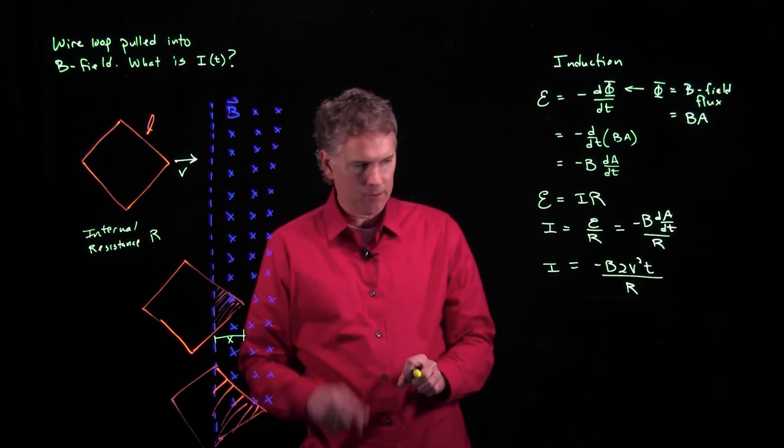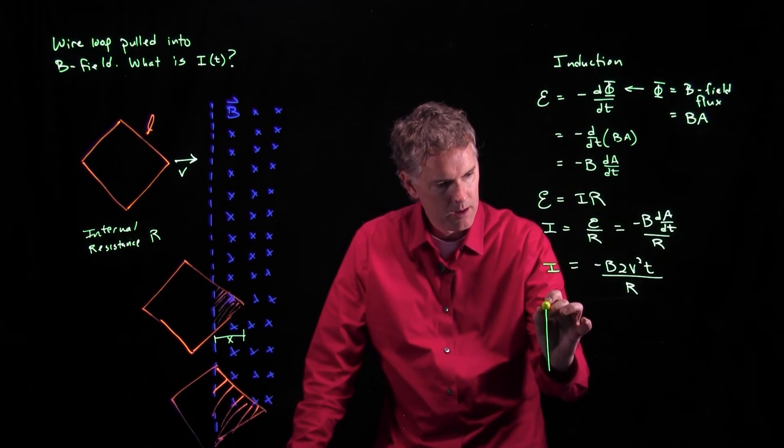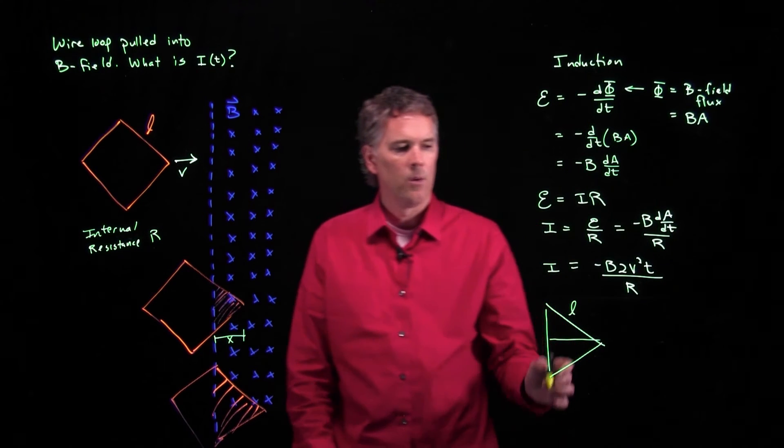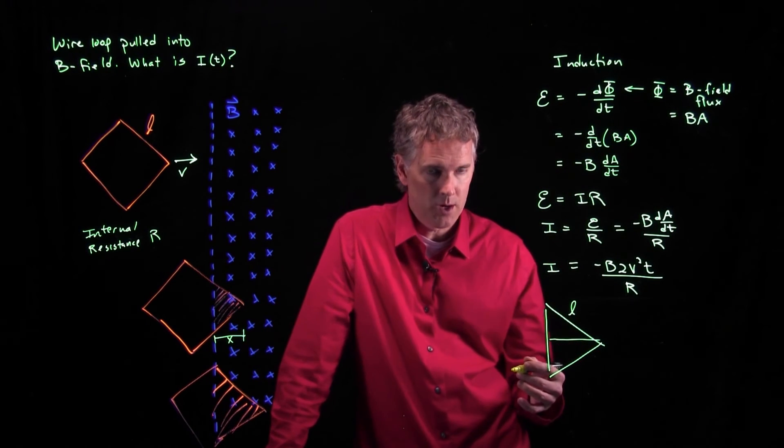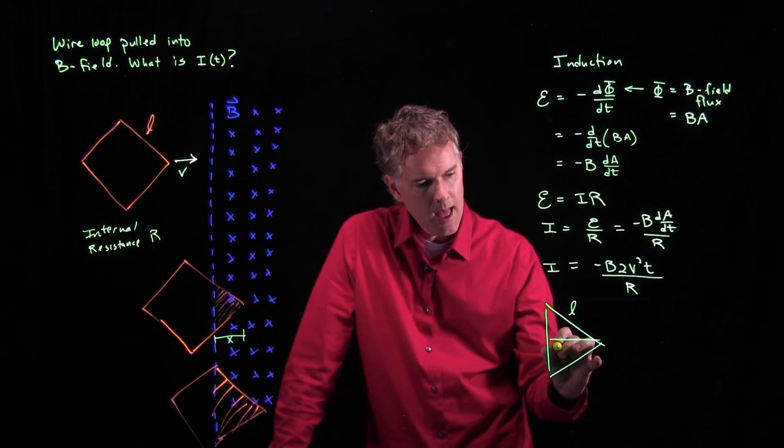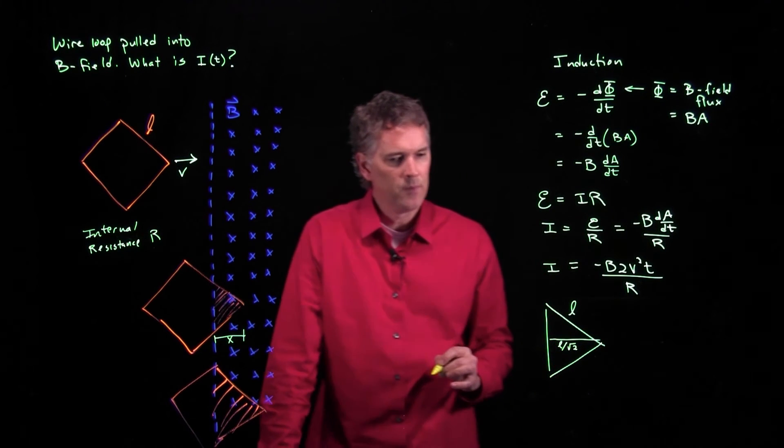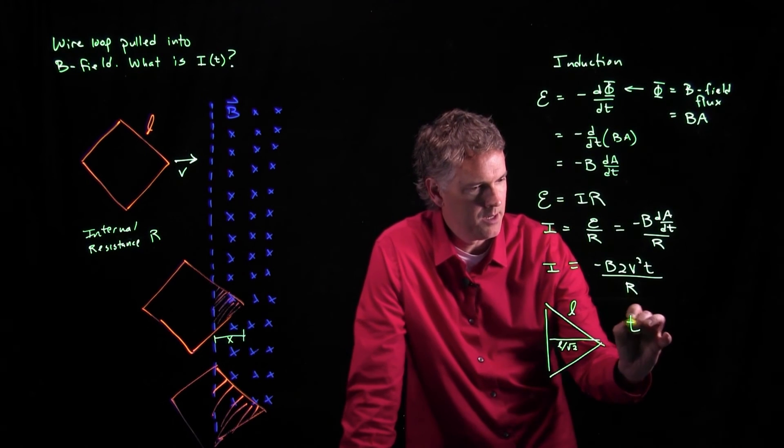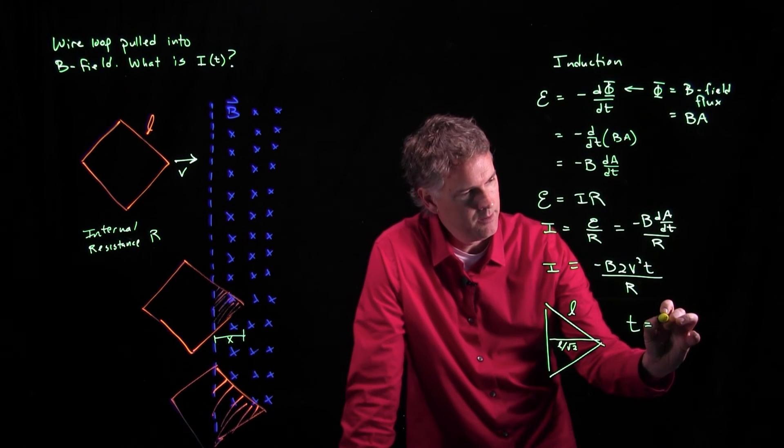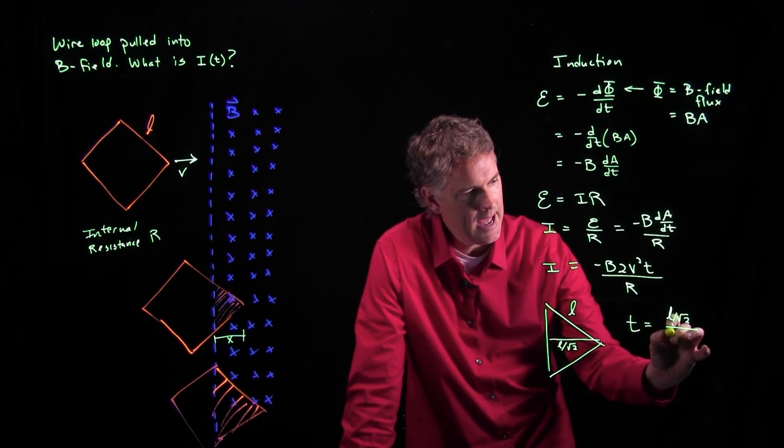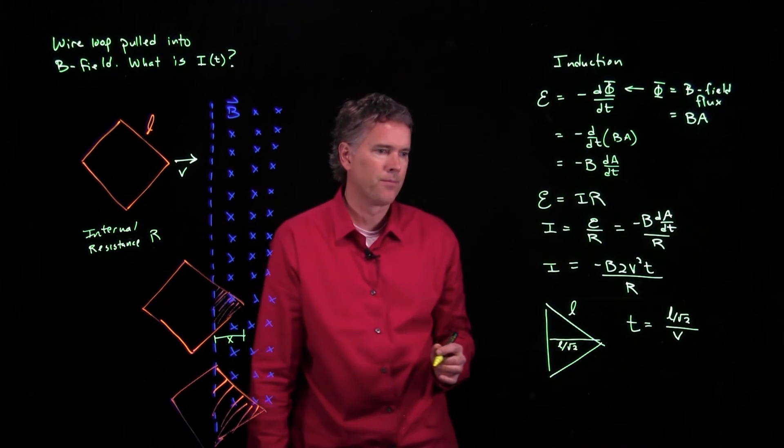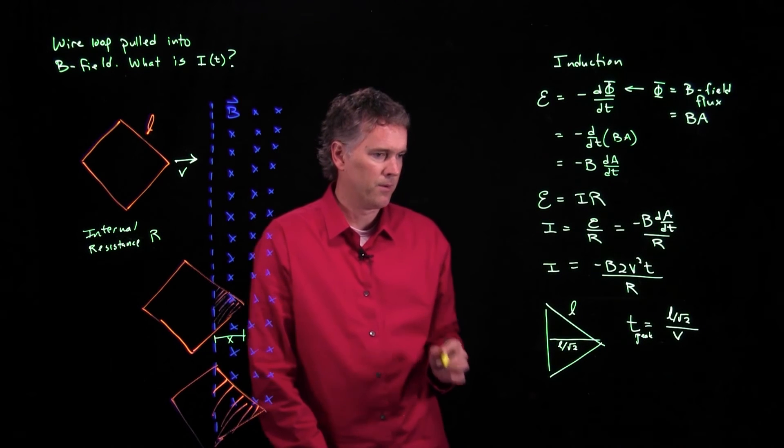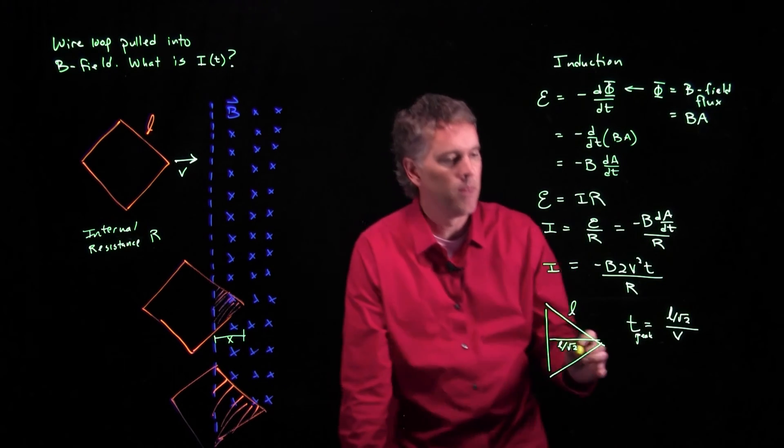To do that, let's look at this triangle again. If I think about this triangle now, this side is L. What is this side? Well, this is a 1, 1, root 2 triangle. So this side down here must be L over root 2. So how long does it take for this thing to advance that distance? That's not too bad. It takes a time equal to how far you've gone, L over root 2 divided by how fast you do it, v. This is the time to reach the peak of the current. And so now you can figure out what the peak current is.